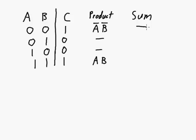Over here for the sum, the first row is not applicable because the output's a one. The second and third rows are applicable because the output's a zero. So here's the second row, the output's a zero. The input A is a zero, so we use A in its not inverted form and it's ORed with B in the inverted form. And the third row, the variable A is a one, so it's in its inverted form. And the variable B is a zero, so it's in the not inverted form.